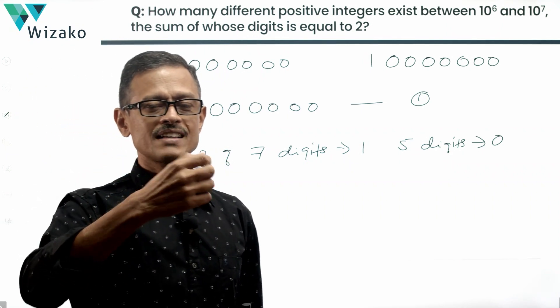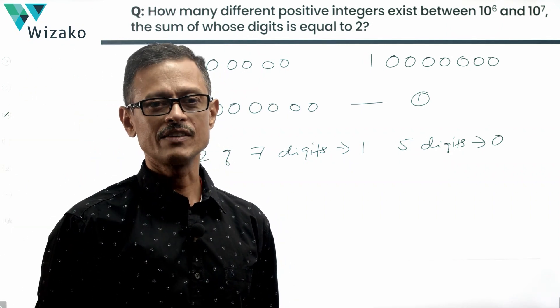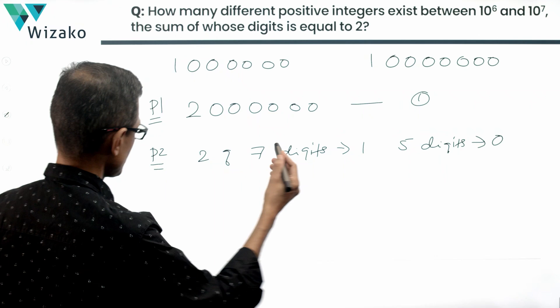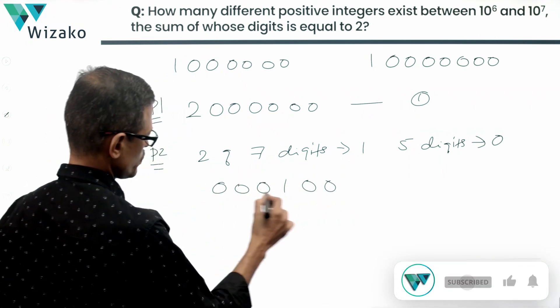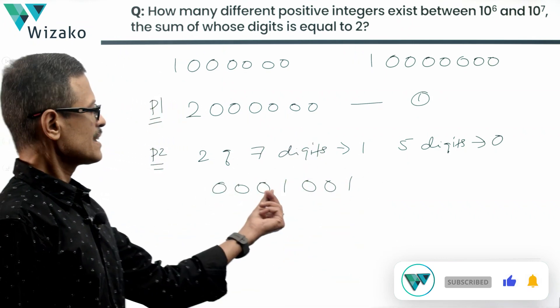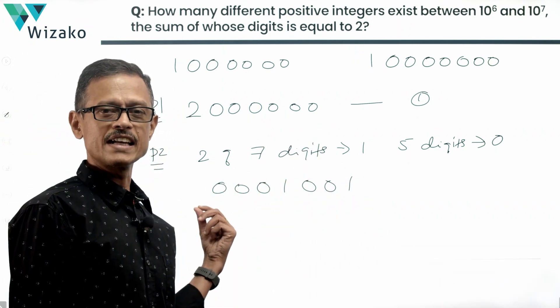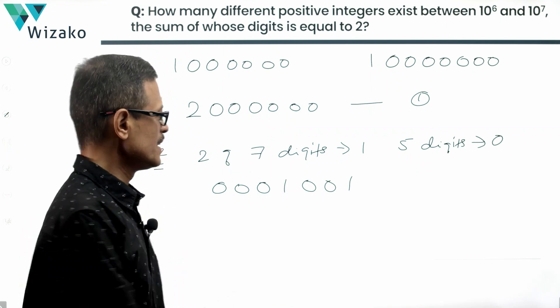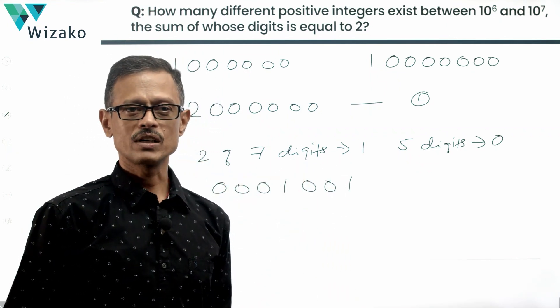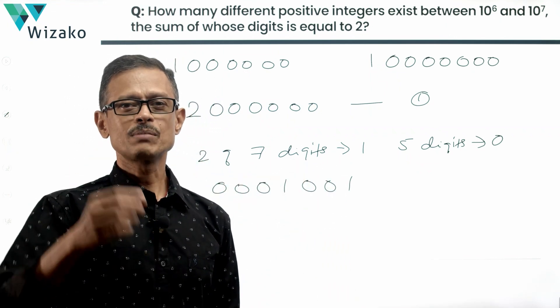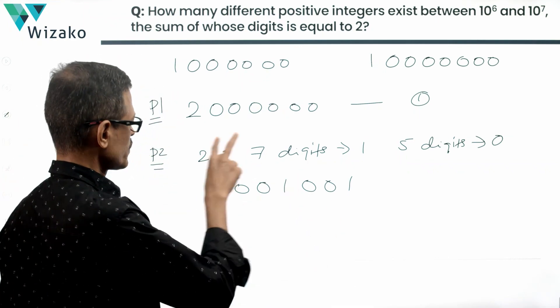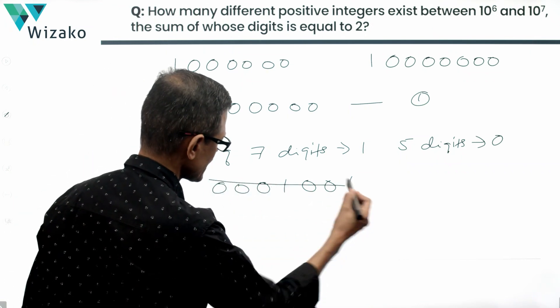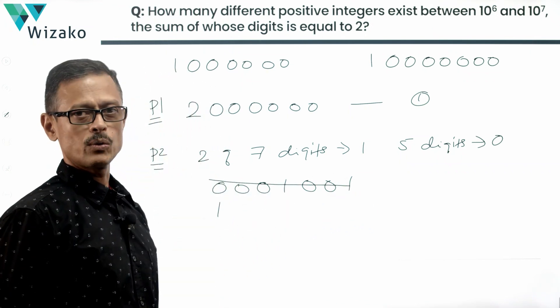Look at it. We can't pick some random 2 digits out of the 7 digits to be 1. For example, if I wrote this number as 0, 0, 0, 1, 0, 0, 1, a 7 digit number, this number is not a number between 10 raised to the power of 6 and 10 raised to the power of 7. This number is actually 1001, which is actually a 4 digit number. It's a number that lies between 10 cube and 10 raised to the power of 4. So obviously, there are two 1s out of these 7 digits. It's quite evident that the leftmost digit has to be a 1.